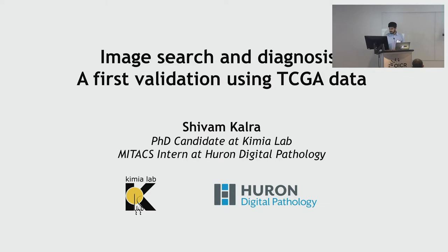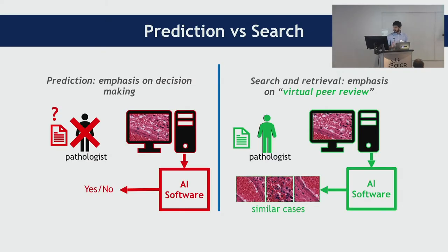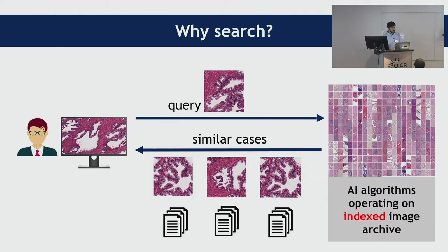There are two types of things you could do with AI in digital pathology: prediction and search. My focus for this particular study is on search. Search basically offers some sort of virtual consultation to a pathologist — he could make a query while doing his work and get similar cases back that already have a diagnosis, utilizing the wisdom existing in large archives.